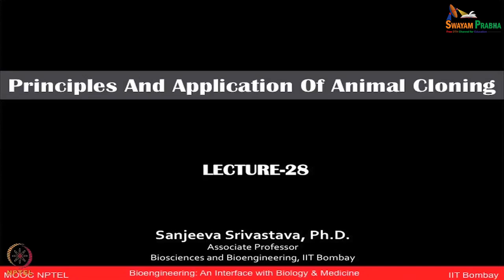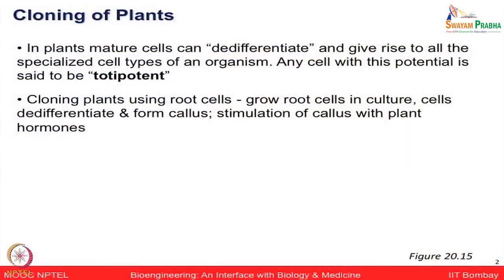Cloning — I think we briefly talked about it in the context of DNA cloning, how to make multiple copies of DNA. I was talking about the role of biotechnology and how you can make multiple copies of genes which could favor certain properties used in recombinant DNA technology. Now let us look at animal and organism cloning, which looks much more like a scientific fiction type of idea. But before that, cloning can also happen in plants.